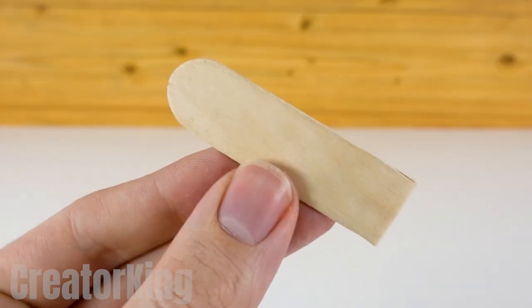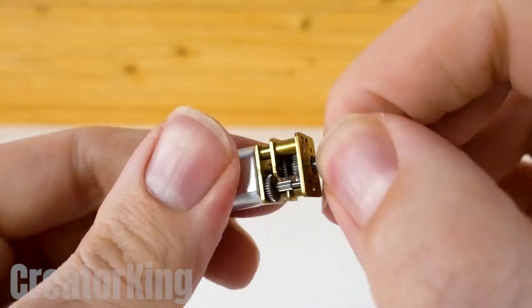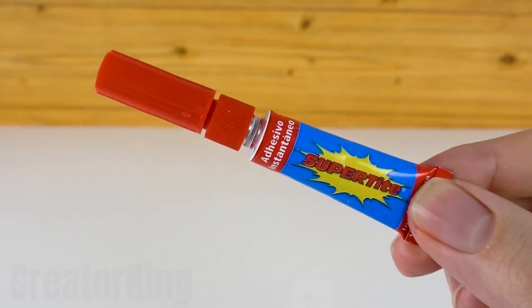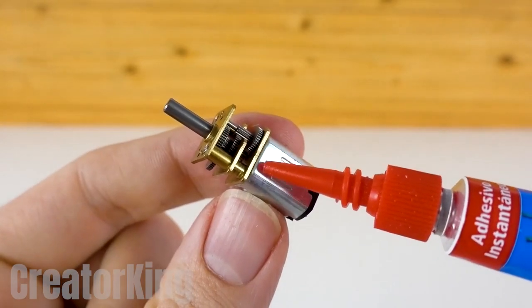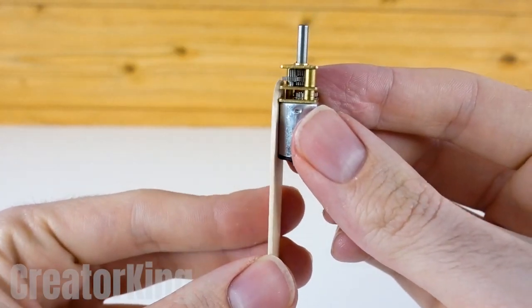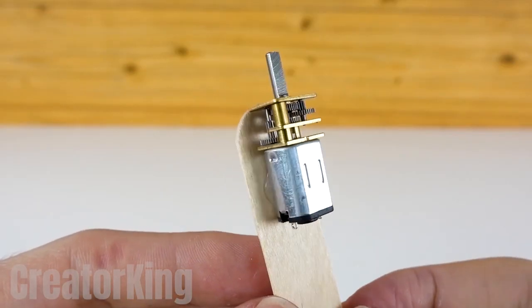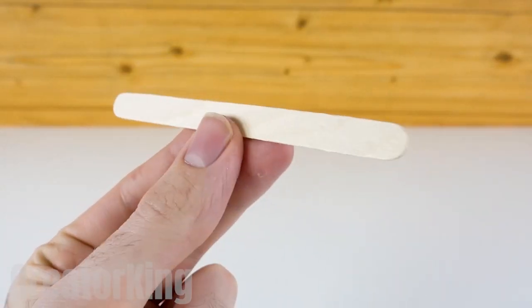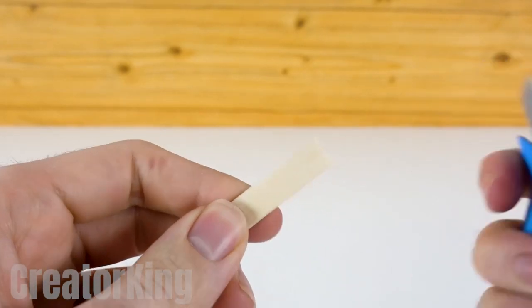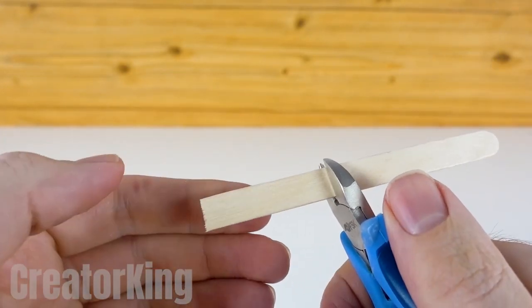You already know that popsicle sticks are the favorite material for creating inventions on this channel. In addition to the piece of popsicle stick, we'll need this small motor which is somewhat different from the others. You're probably wondering, hey Creator King, why do we need two motors? And I will answer, patience young Padawan. All will be revealed in due time.